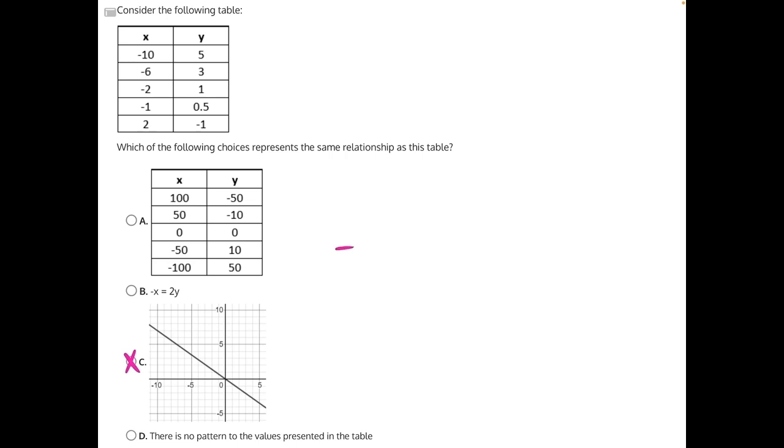For answer choice B, we need to rearrange this into y equals mx plus b form, and then we can try some points. We need to isolate y, and 2 is being multiplied to y, so the opposite operation will be dividing both sides by 2. This will cancel, giving us negative x over 2, which we can rewrite as negative 1/2 x, because if it exists in math, there's always one of them. So negative 1/2 x equals y is our equation for answer choice B.